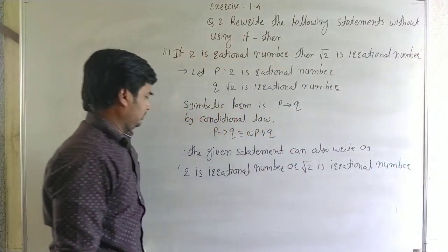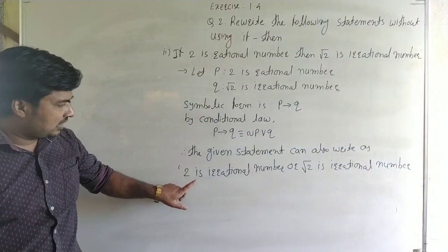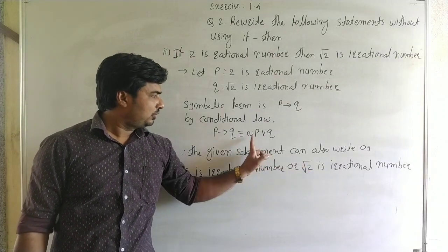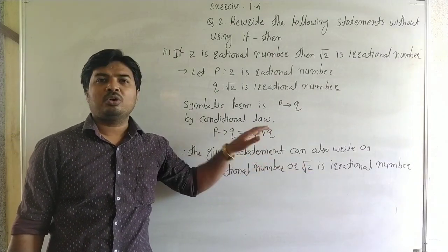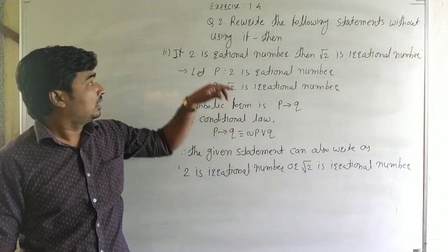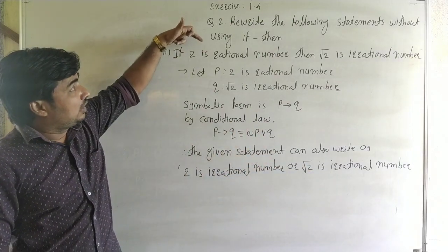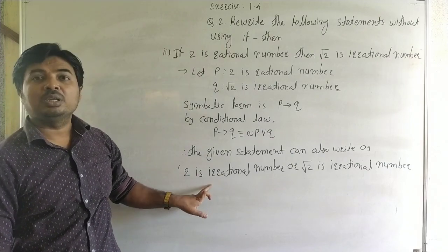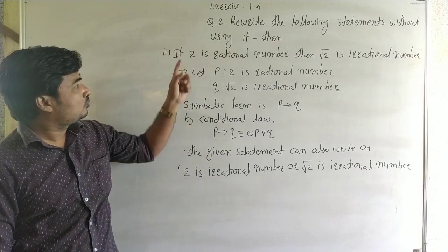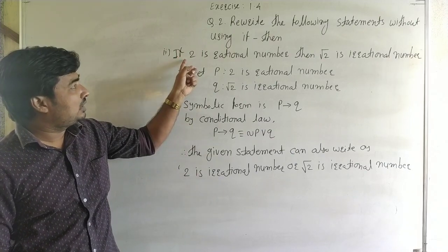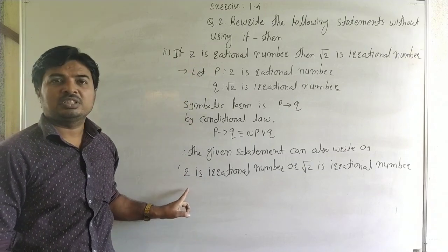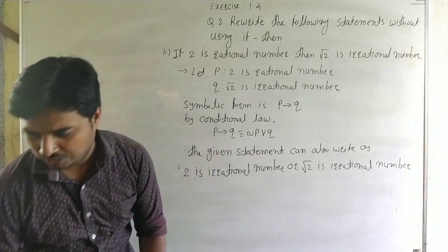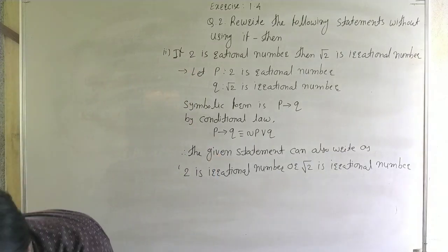Therefore the given statement can also be written as negation P or Q. Here, P is '2 is a rational number,' so negation P is '2 is not a rational number.' The rewritten statement without using if-then is: 2 is not a rational number or root 2 is irrational.